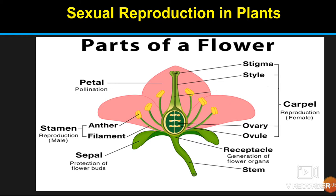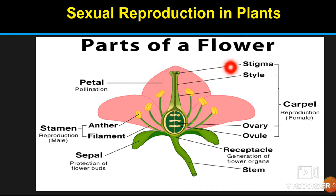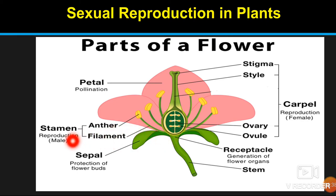Let's look at the flower anatomy again. This is the receptacle; this particular part is the ovary. Inside the ovary, the ovule is present. This is the style, and the uppermost part is the stigma. Stigma is joined to the ovary with the help of the style. Together, stigma, style, and ovary are known as carpel. Inside the anther, pollen grains are present, and the anther is joined with the help of the filament. Anther plus filament is known as stamen.